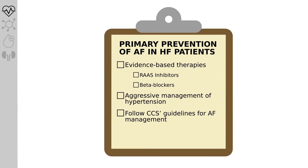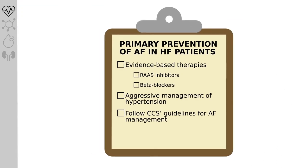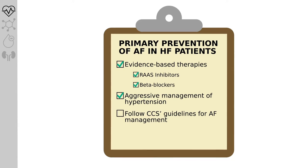Primary prevention of atrial fibrillation in patients with heart failure may be achieved through the application of established evidence-based therapies for heart failure. Aggressive management of comorbidities linked to both diseases, such as hypertension, should be pursued. Once it occurs, classification and management of atrial fibrillation should follow current CCS guidelines.